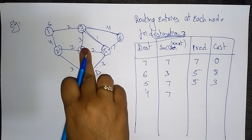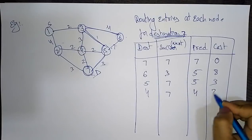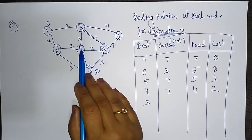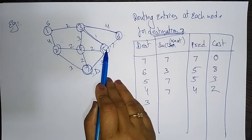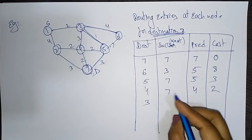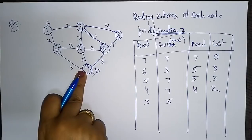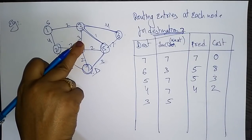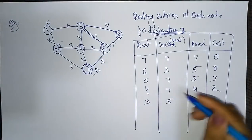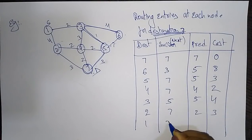For node 4: the successor is 7 (the destination), the predecessor is 4 itself, and the cost is 2. For node 3: the successor is 5 (since the cost from 3 to 5 is 1, which is less than going via 4 which costs 3), the predecessor is determined from the path, and the cost is 4 — taking the shorter path via 5.